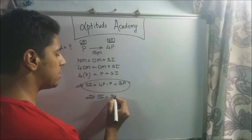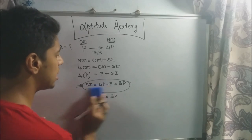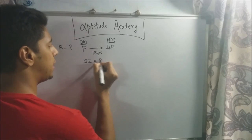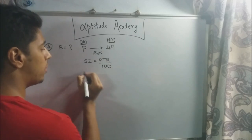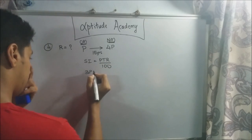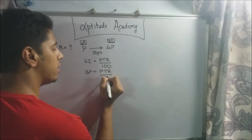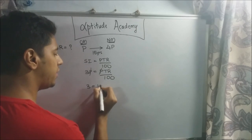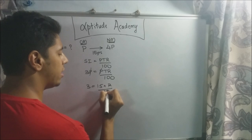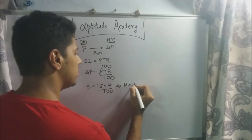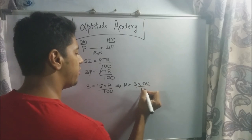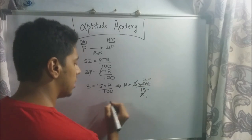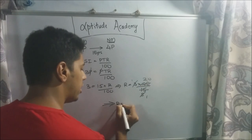Now plug into the simple interest formula: SI equals PTR divided by 100. Since SI equals 3p, we get 3p equals p times 15 times r divided by 100. One p cancels on each side, giving 3 equals 15r divided by 100. Therefore r equals 3 times 100 divided by 15, which equals 20 percent.